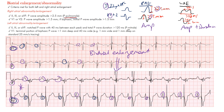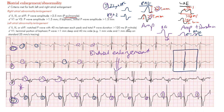In V1, a biphasic P wave has an initial portion representing right atrial depolarization and a terminal portion representing left atrial depolarization. The same is true in inferior leads — the initial portion is right atrial and the terminal is left atrial. The right atrium always depolarizes before the left atrium.